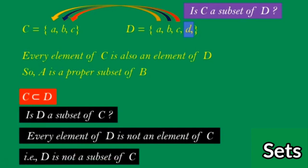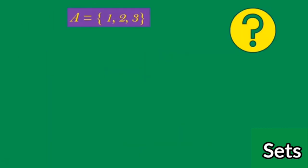When you have two sets such that one set is a subset of the other, we cannot guarantee that the second set is also a subset of the first. If the first set is a proper subset of the second, the second is different from the first and cannot be a subset of the first.